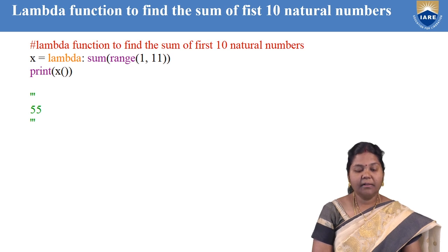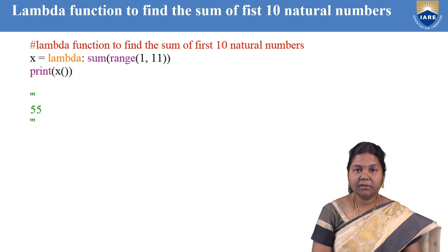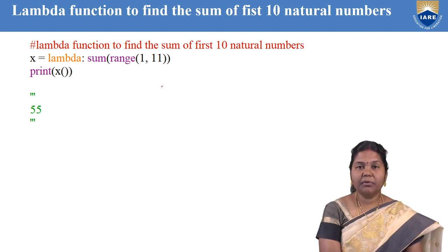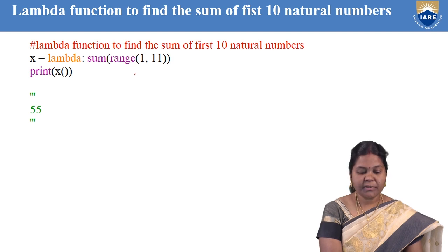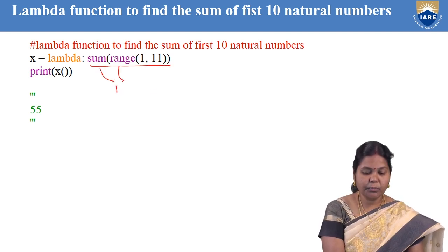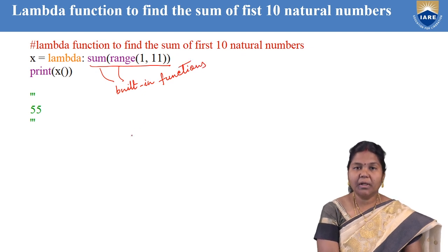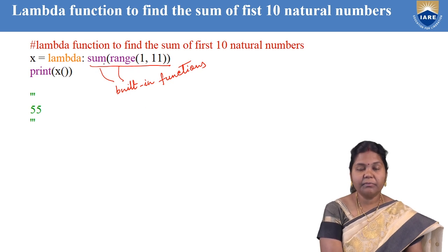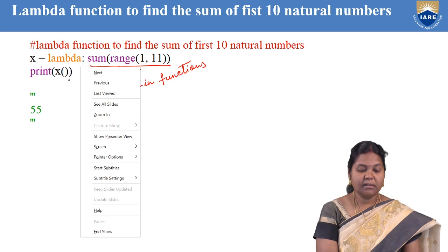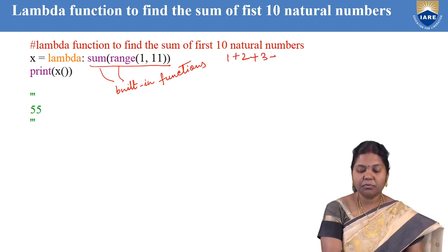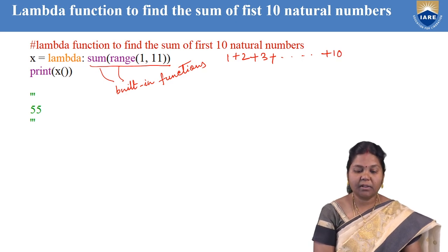Let us see another example where we use the lambda function to find the sum of the first 10 natural numbers. Here lambda is the keyword and we have not used any argument. We are directly using the built-in sum function and built-in range function in the expression part. The range of 1 comma 11 means it will iterate 10 times and every time it will compute the sum. If you print this you will get the output as 55, which is 1 plus 2 plus 3 up to 10. This is another way lambda functions can be used.